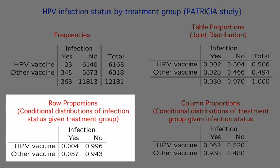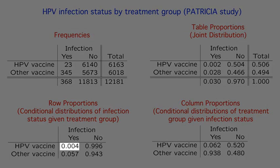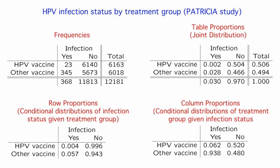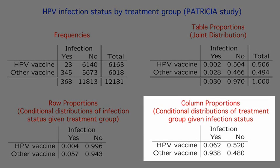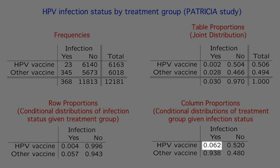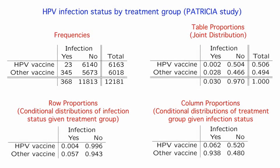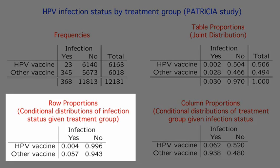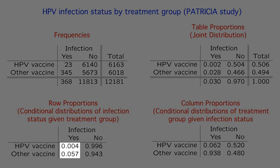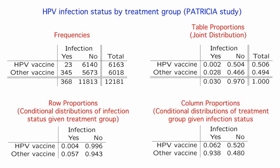In the table of row proportions, of participants who received the HPV vaccine, only 0.4% acquired an infection, while in the group who did not receive the HPV vaccine, 5.7% acquired an infection. In the table of column proportions, of subjects who acquired infections, 6.2% were in the HPV vaccine group and 93.8% were in the other group. Because the question of interest is whether the vaccine prevents HPV-16 infection, the row proportions give the most direct interpretation. An infection rate of 5.7% versus 0.4% is compelling evidence that the HPV vaccine is effective. In later videos, we'll examine whether this difference could have happened by chance.